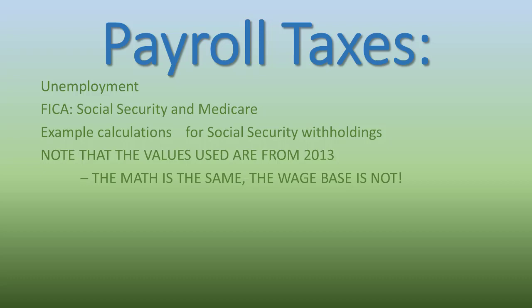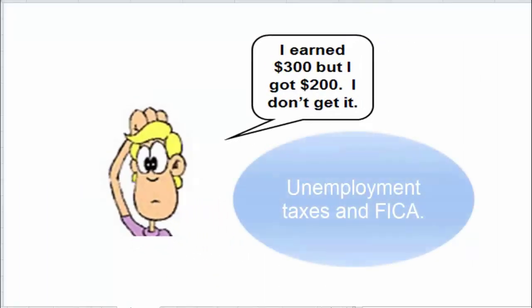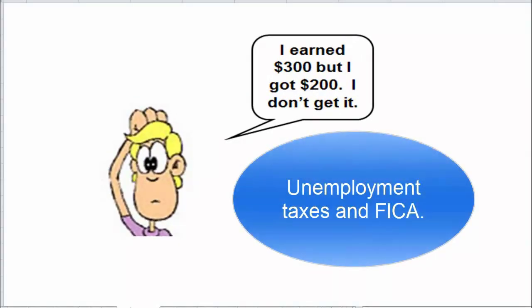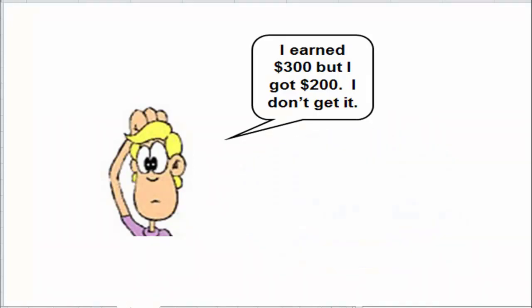The federal government and most states impose some form of employment tax. The two major types are unemployment and FICA. Unemployment tax is only paid by employers, and there is both a state and a federal unemployment tax.